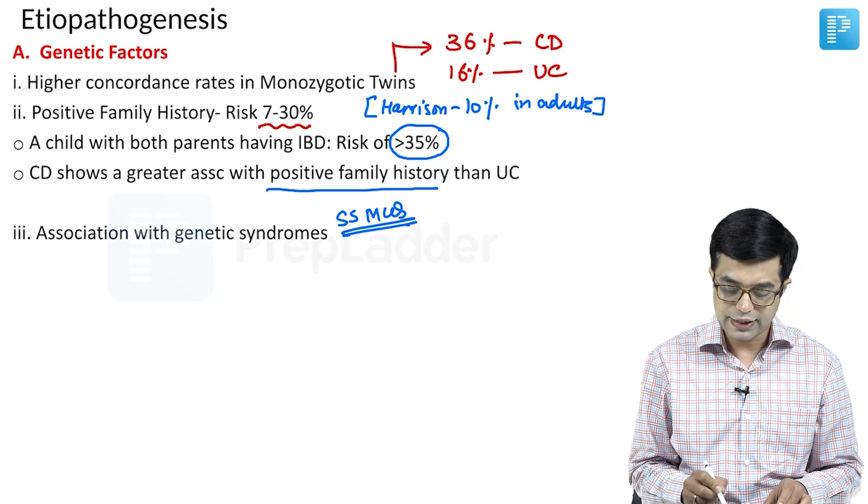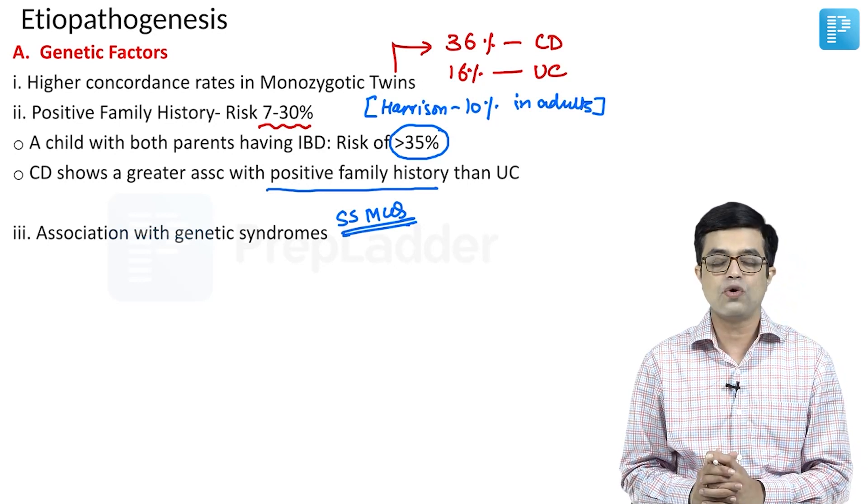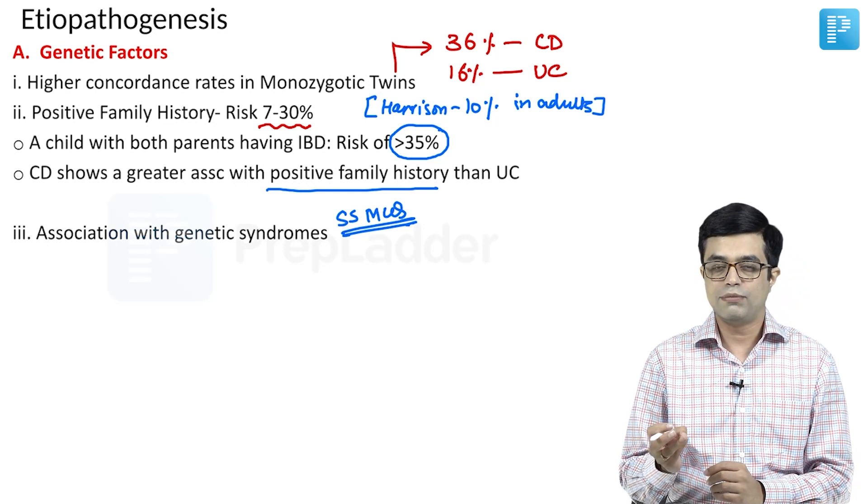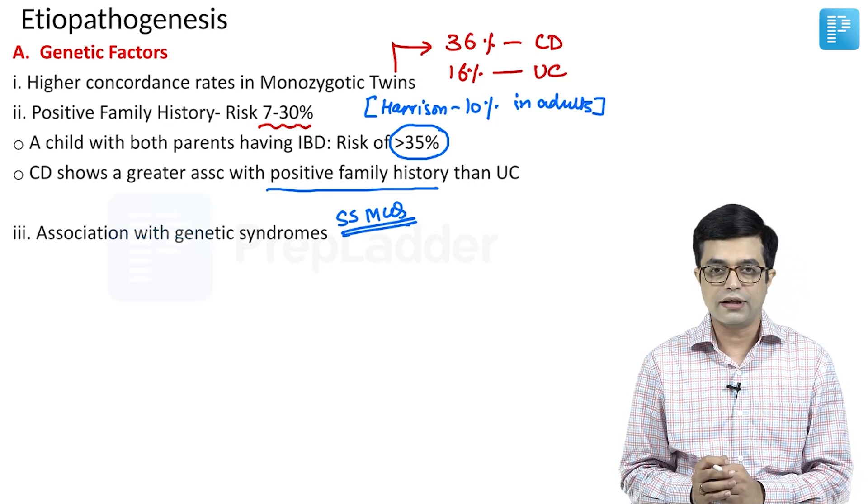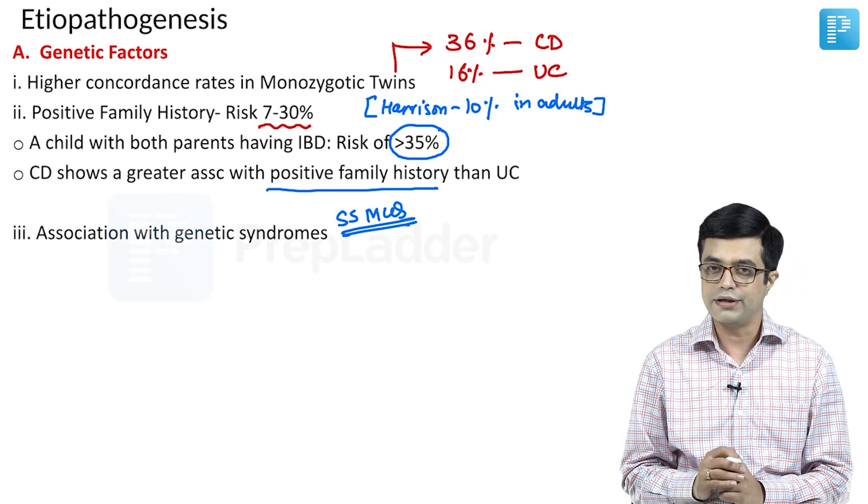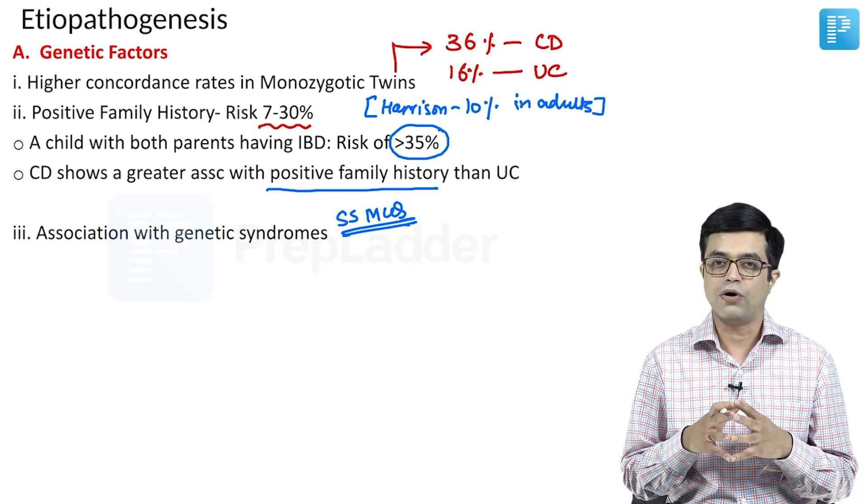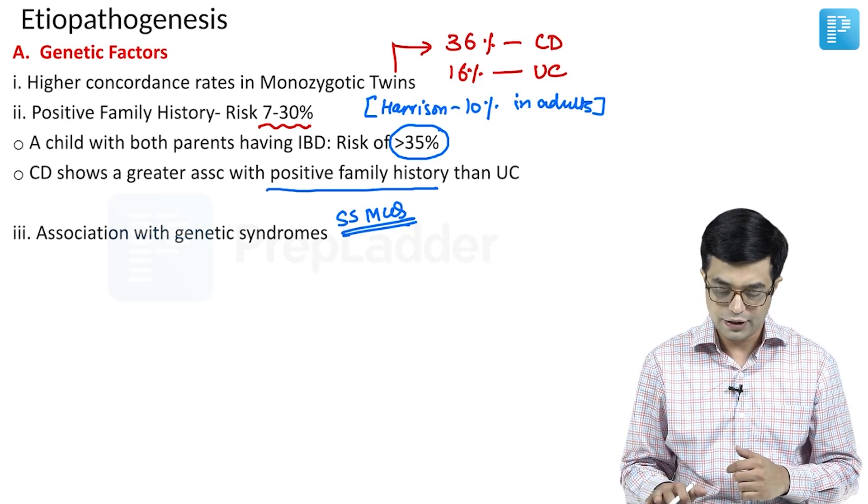What I have done is I have clubbed all the genetic syndromes described. I have taken the help of Nelson, Robbins 10th edition and Harrison 20th edition. So, this list is an amalgamation of all three, Nelson, Harrison and Robbins.